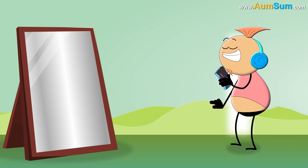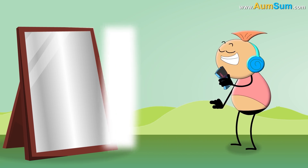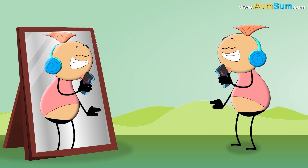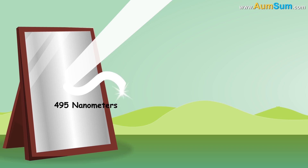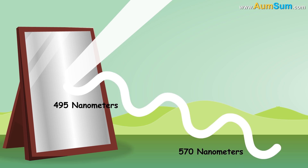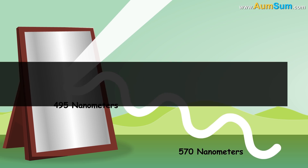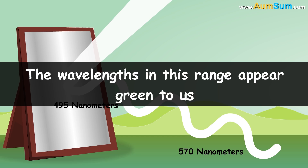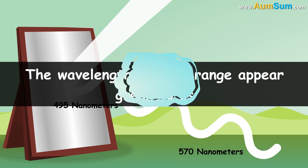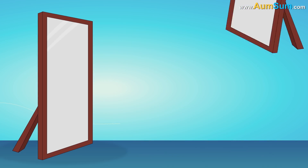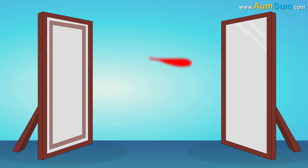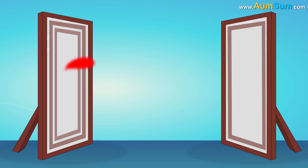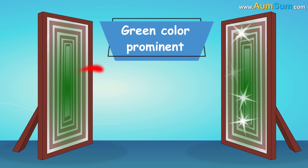Thus, it creates an image of whatever is in front of it. Mirrors best reflect light at wavelengths between 495 and 570 nanometers — the wavelengths in this range appear green to us. We can observe this when two mirrors face each other; the same image is reflected back and forth, making the green color prominent.